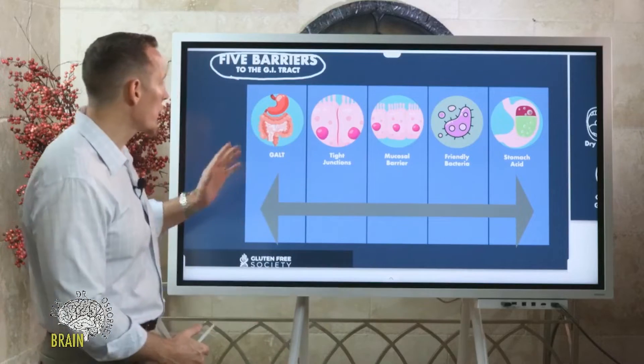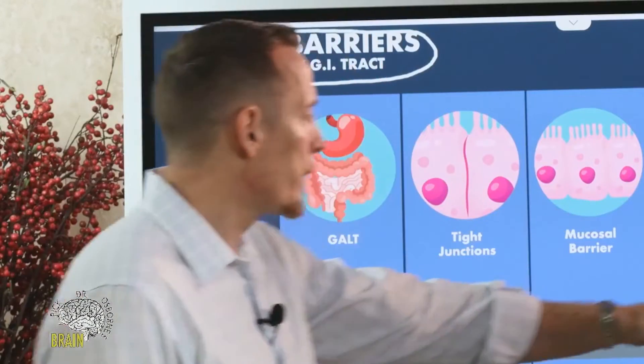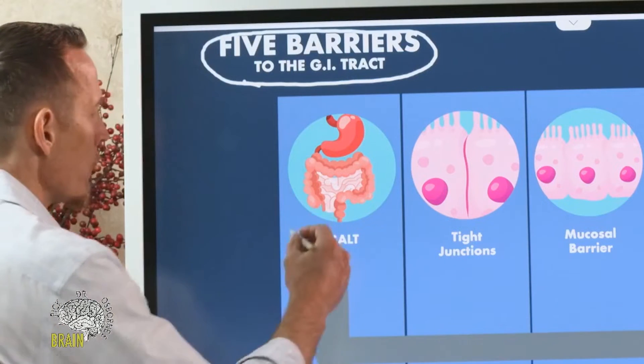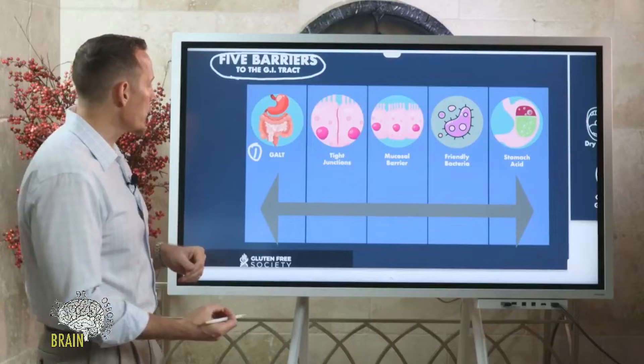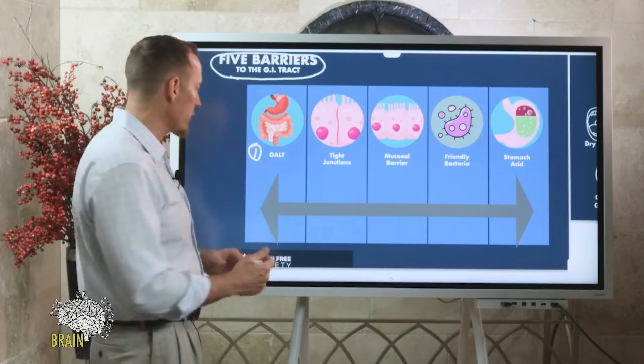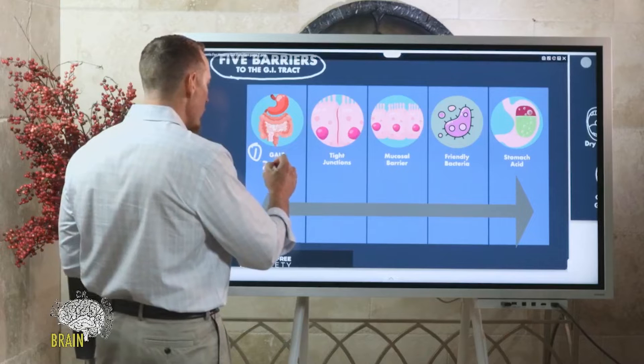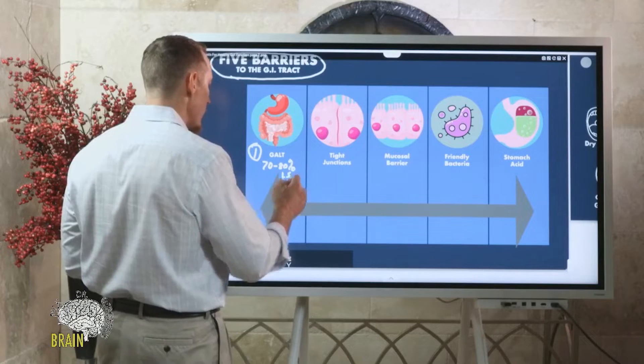Five barriers - what are they? The first, probably one of the most important, is the GALT. The GALT stands for gastro-associated lymphoid tissue. This is like a massive set of tonsils that wraps around your small intestine.